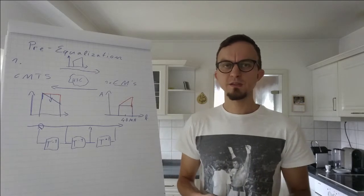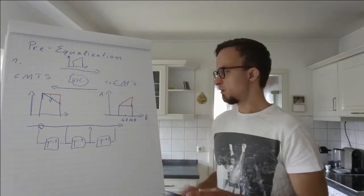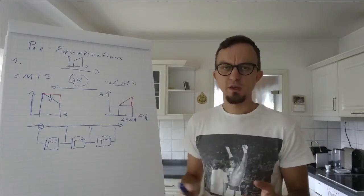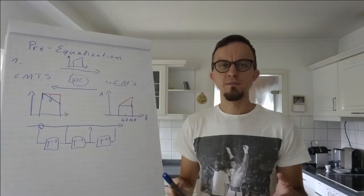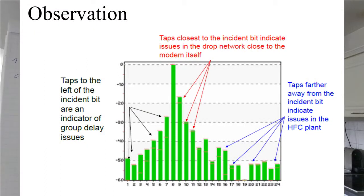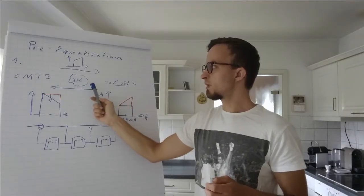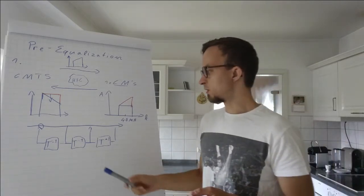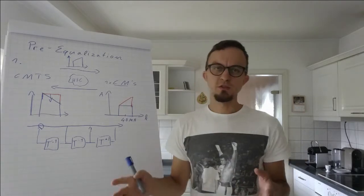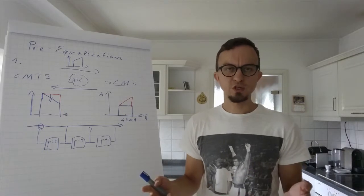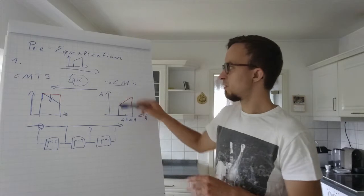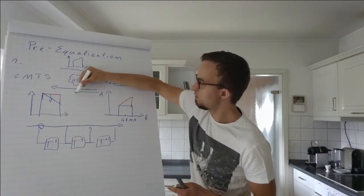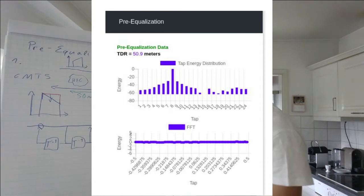The next cool thing is proactive network maintenance. You can use these tabs which represent the pre-equalization coefficients. Because of the correlation between time and frequency space, they represent how far away the impacts are in your HFC network. For example, if the biggest impact is at the third tab, we can assume over speed-of-light correlation how far away the biggest impact in our HFC network from our cable modem is.